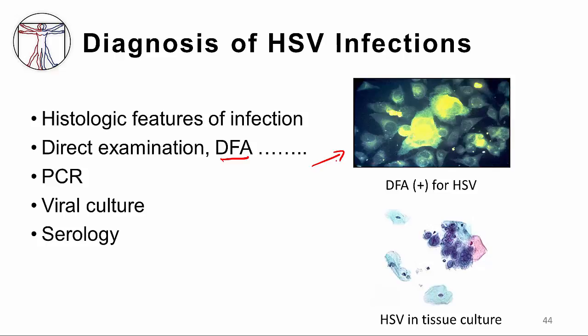An even more sensitive way to diagnose herpes is by using polymerase chain reaction — the methodology of replicating DNA to a point that it is easily detectable. This is used frequently now for diagnosing herpes infections, especially in the brain.